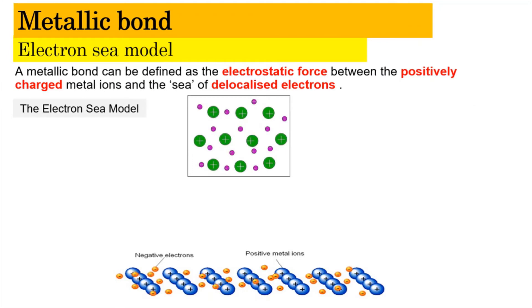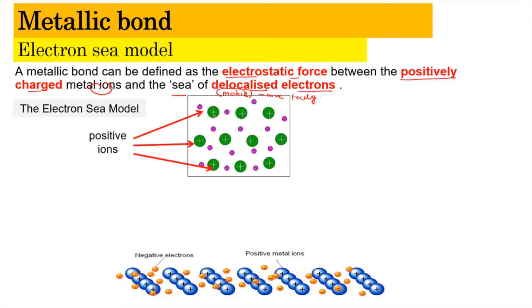So the electron sea model. When we talk about the electron sea model, we are talking about the metallic bond. A metallic bond can be defined as the electrostatic force that exists between positively charged metal ions and the sea of delocalized electrons. The delocalized electrons here means that they are mobile electrons that can move freely.